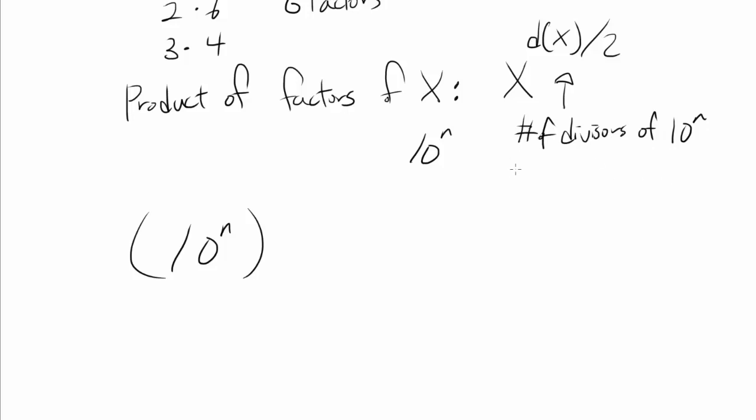Well, we know 10 to the nth can be written as 2 to the nth times 5 to the nth. So the number of divisors is going to be n plus 1 times n plus 1. And here's the reason: all of the divisors of 10 to the nth is going to have some number of 2s and some number of 5s, and we want to know how many ways we can choose both of them, and you can have either 0, 1, 2, or 3 2s, all the way to n 2s.